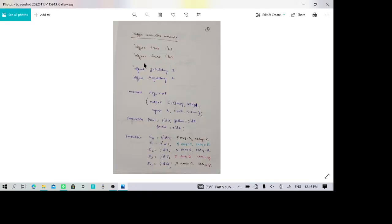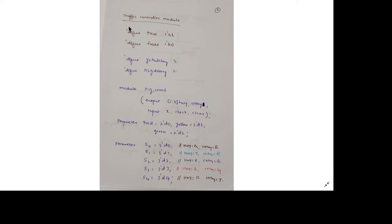Now we are entering the program part of Verilog. Any higher-level language program will start with define statements. Here we use tick-define. True is defined as bit 1, false as bit 0. Yellow-to-red delay is given as 3 units of time, and red-to-green delay is given as 2 units of time. That is how the constant values are defined.